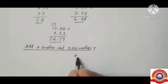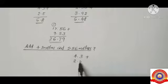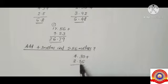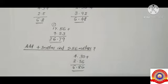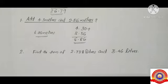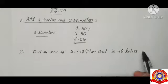Next we have to solve some problems. First one: add 4.3 meters and 2.56 meters, that is 4.3 plus 2.56. In the decimal part, add 6 and 0, and adding gives us 6.86. So 4.3 meters plus 2.56 meters equals 6.86 meters. Next we have to find the sum of 2.738 liters and 3.46 liters.